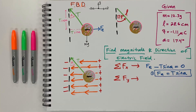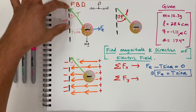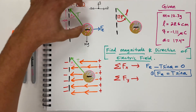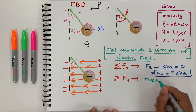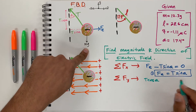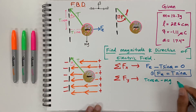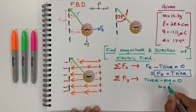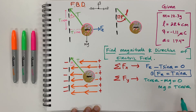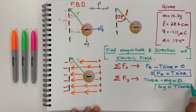We'll label that equation one. Then in the y direction, we have T cosine theta going up. Going down is mass times gravity. Again, everything is in equilibrium and equals zero. So we solve: mg equals T cosine theta. We'll label that equation two.